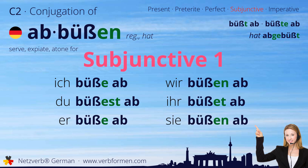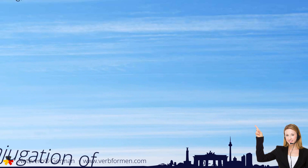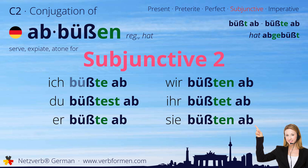Now we move on to the subjunctive two. Ich büßte ab. Du büßtest ab. Er büßte ab. Wir büßten ab. Ihr büßtet ab. Sie büßten ab.